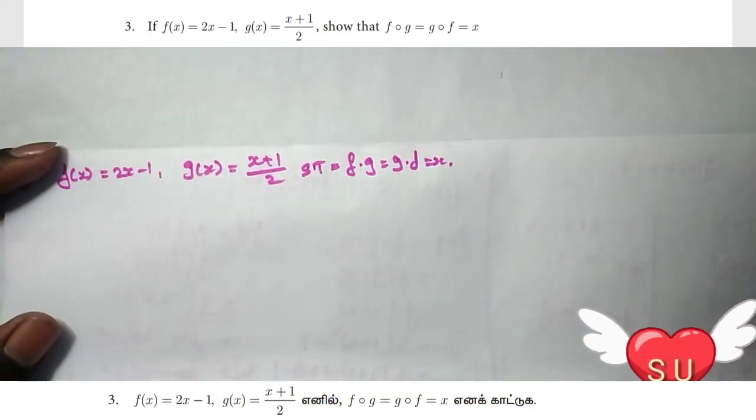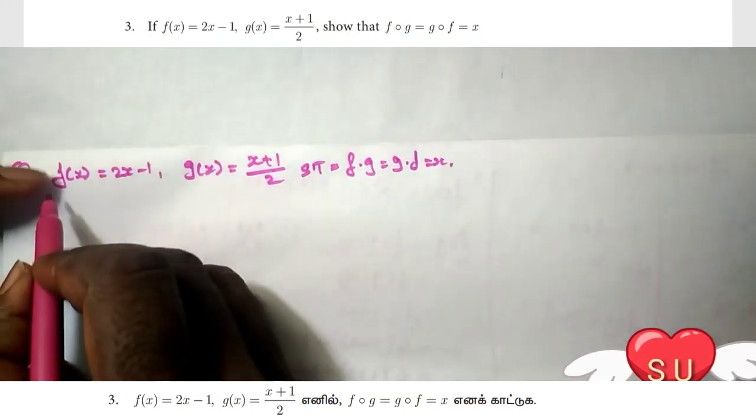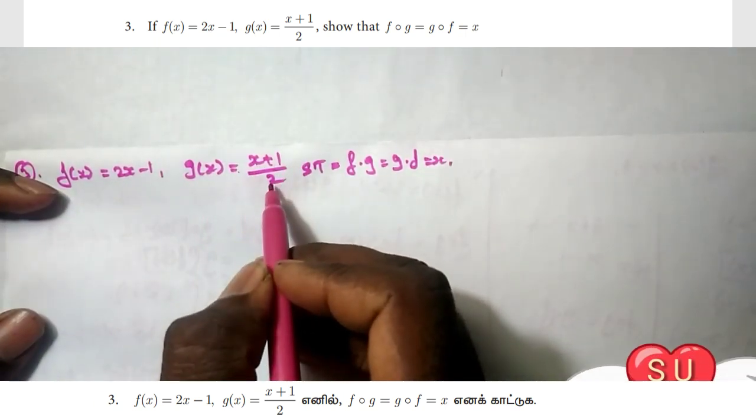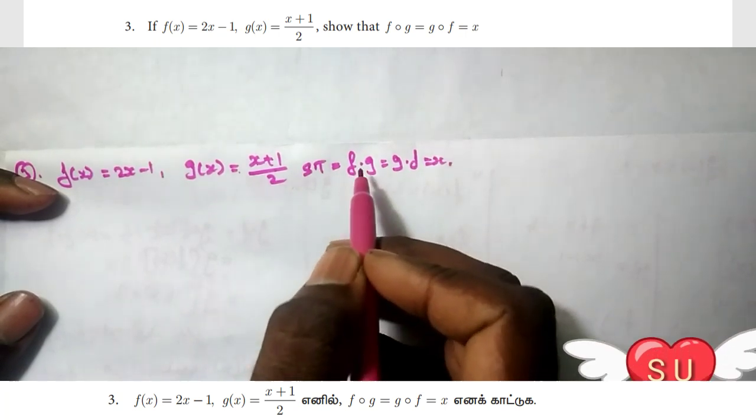Hi friends, welcome. This is Sakti. In this video, f(x) = 2x - 1 and g(x) = (x + 1)/2. We need to show that f∘g = g∘f.